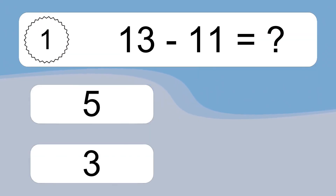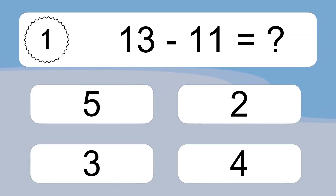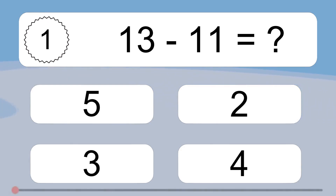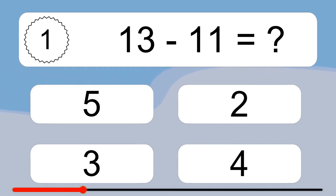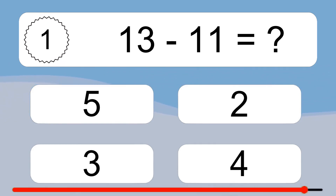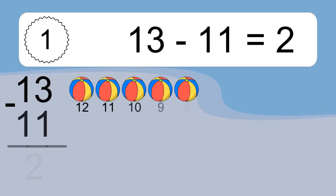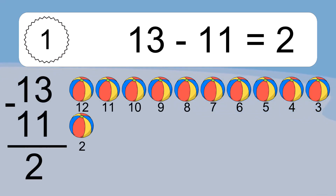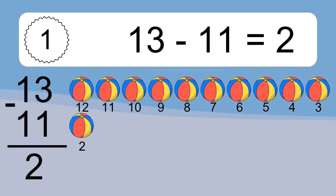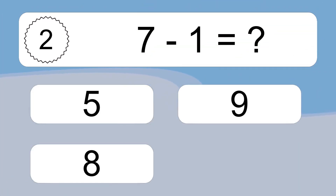13 minus 11 equals what? 13 minus 11 equals 2. Let's count it: 12, 11, 10, 9, 8, 7, 6, 5, 4, 3, 2.